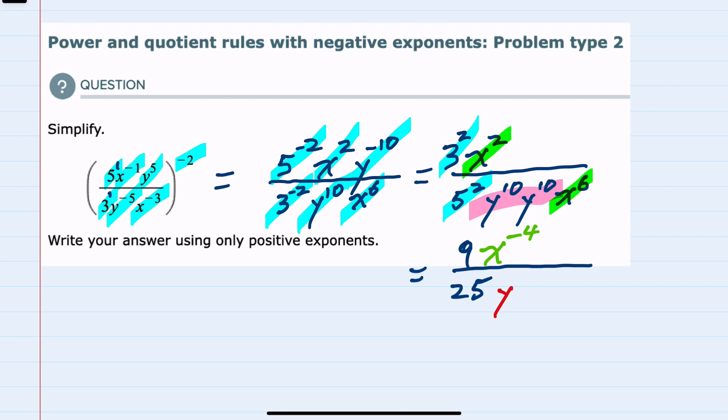From here the last simplification that I should make is, since I'm told to use only positive exponents, I need to get rid of this negative 4 exponent.